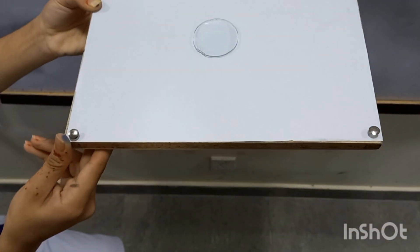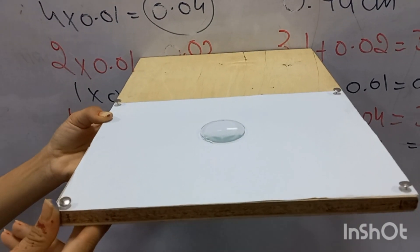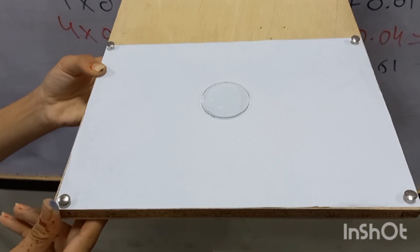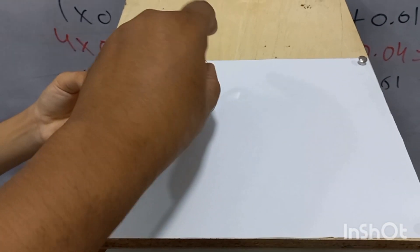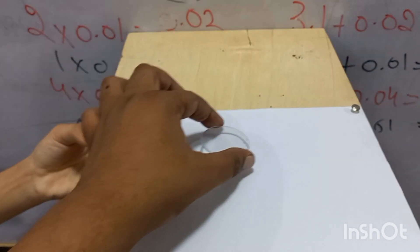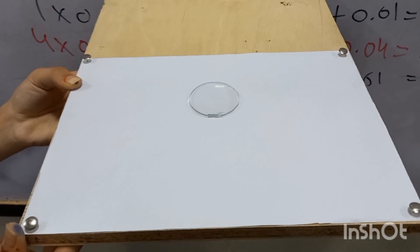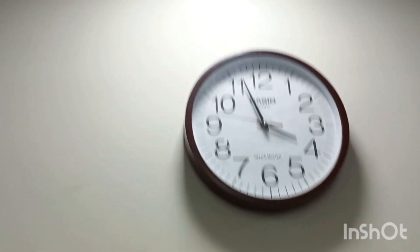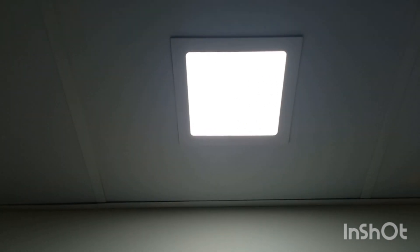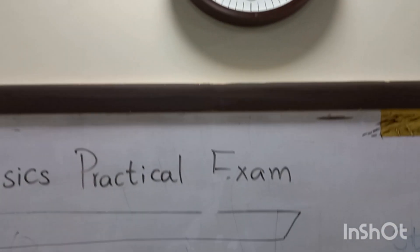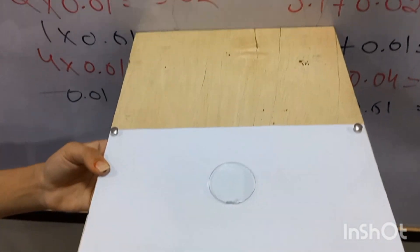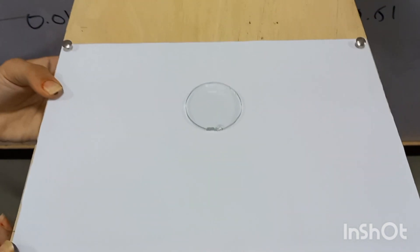Here we have a convex lens and this board is acting like a screen — I have fixed a white paper on it. I want to find the focal length of this convex lens. For this purpose we are going to use an object: there is a light in my ceiling and I have made some patterns on the surface of that light with a black marker.